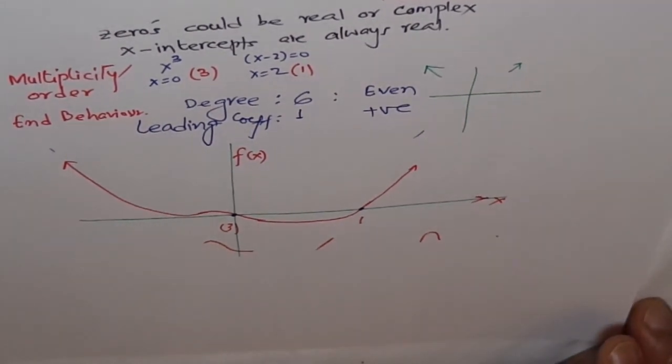Okay, I hope you understand the differences between zeros and X intercepts. X intercepts are representation of real zeros. They don't represent the complex zeros at all. And complex zeros are in conjugate pairs. So there is one difference.